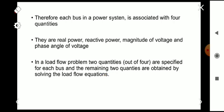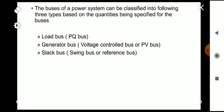In a load flow problem, out of these four quantities, two quantities are specified for each bus and the remaining two quantities are obtained by solving the load flow equations. There are mainly three types of buses: the first one is the load bus, also called a PQ bus; the second one is the generator bus, called a voltage-controlled bus or PV bus; and the third one is the slack bus, which can also be called a swing bus or reference bus.